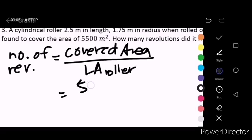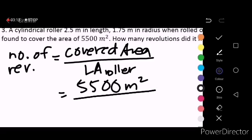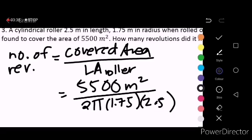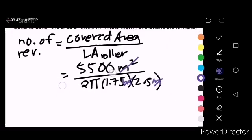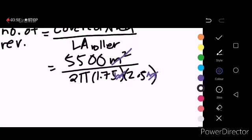Our covered area is 5,500 meter squared. The lateral area formula is 2πRH. So 2π times the radius, which is 1.75, times the length of the roller which becomes the height of the cylindrical roller, multiplied by 2.5 meters. If you notice, because this is meters and this is meters too, the meter squared at the top will be cancelled. Therefore, what remains is just the number or value we need. And this is approximately 200 revolutions.